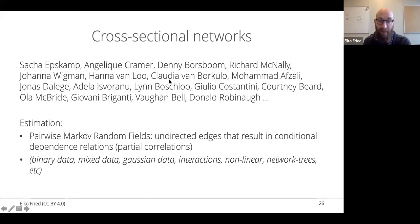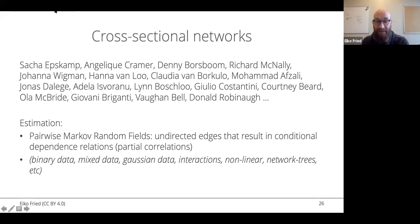I'll give a shout-out to colleagues working on this — this list is outdated and incomplete, apologies to everyone not included. I'll talk today about the Pairwise Markov Random Field, a particular type of network model that is quite prevalent in the literature. It estimates partial correlations, or conditional dependence relations. Does anybody know what conditional dependence relations are and why we estimate them? That's an important takeaway.